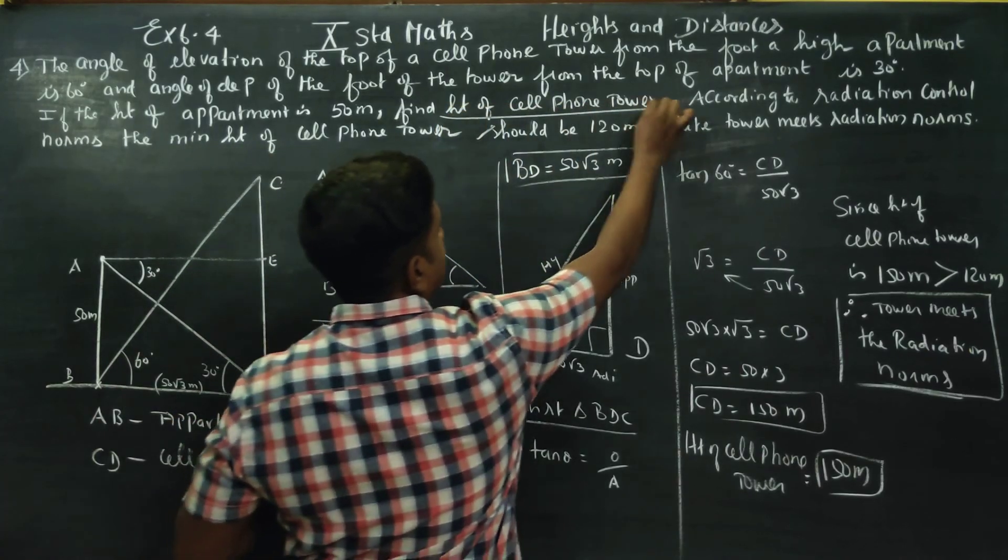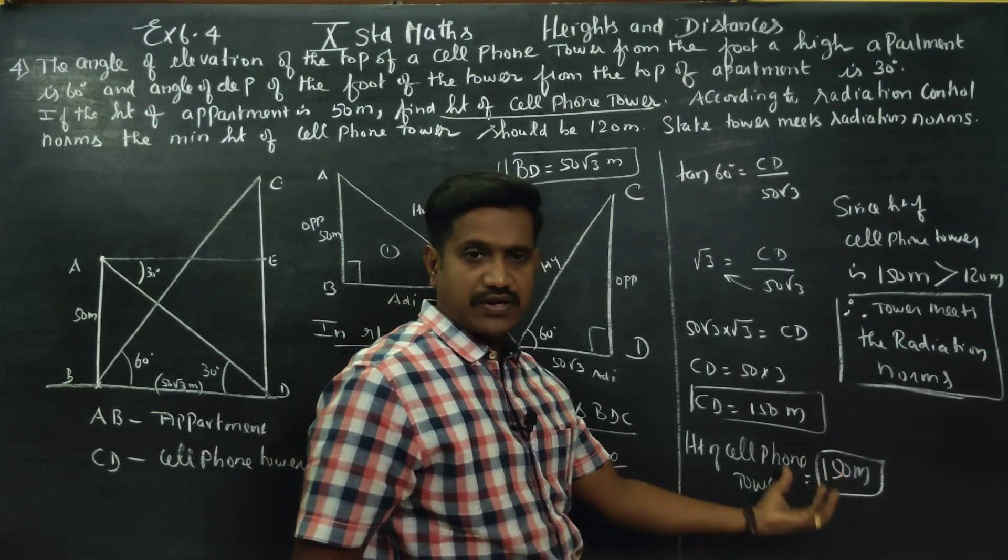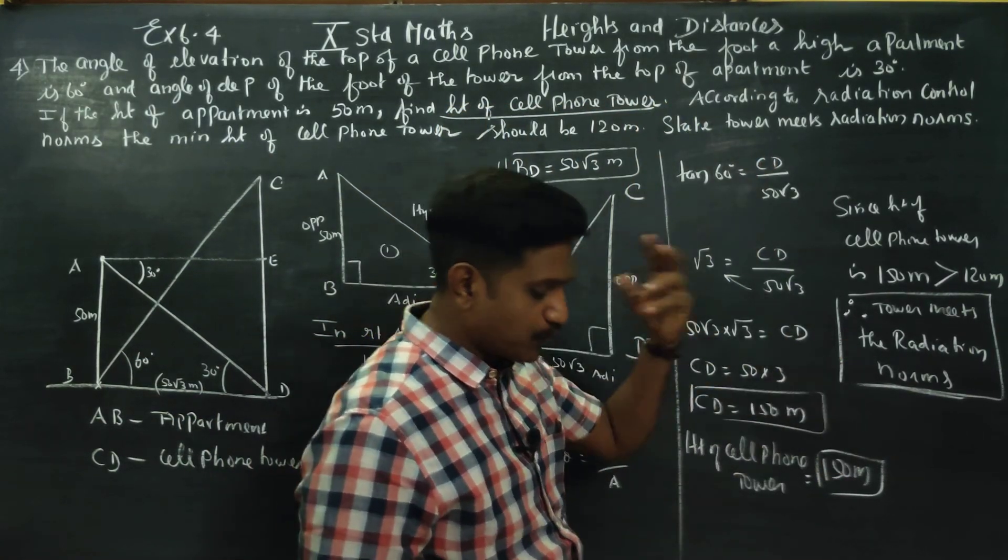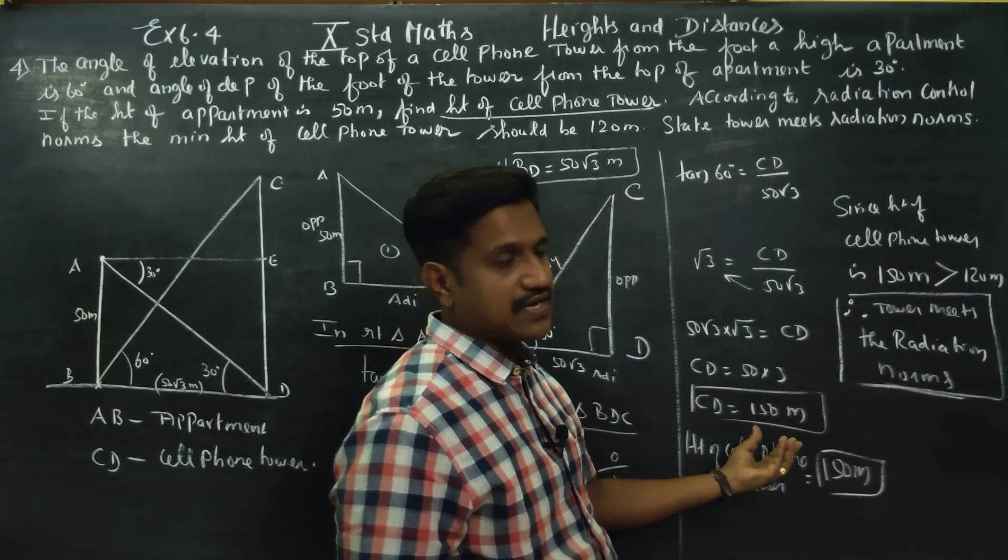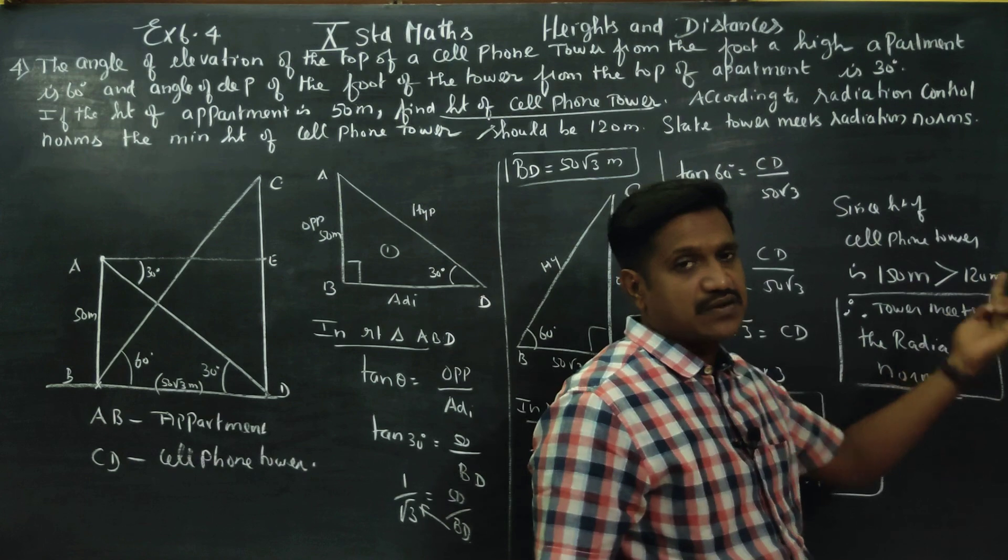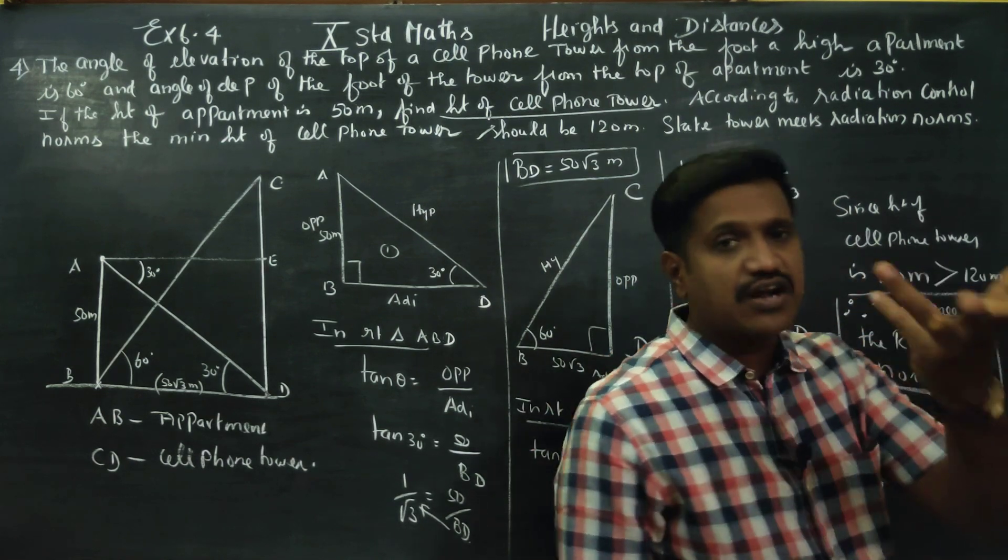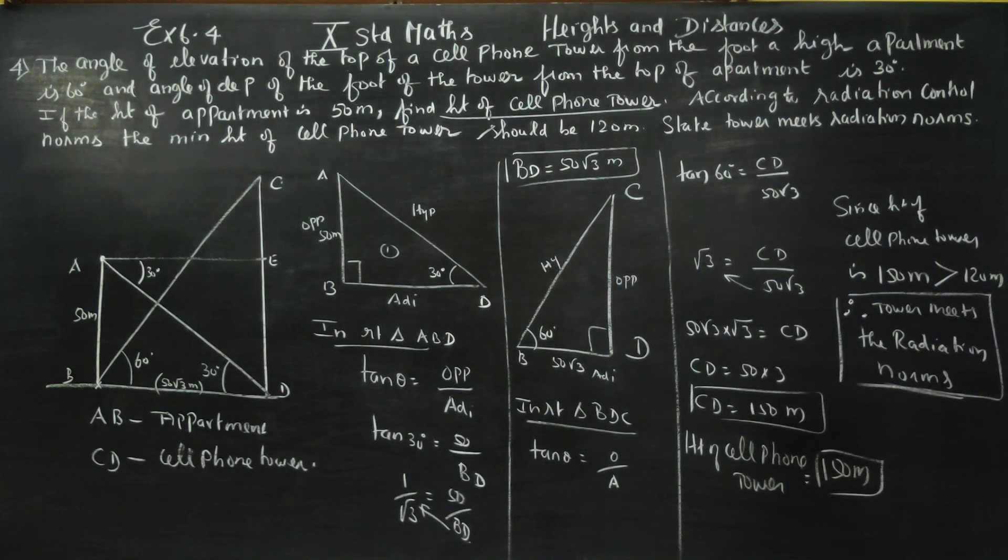Find the height of the cell phone tower. The height of the cell phone tower is 150 meters. The tower meets the radiation norms. Thank you.